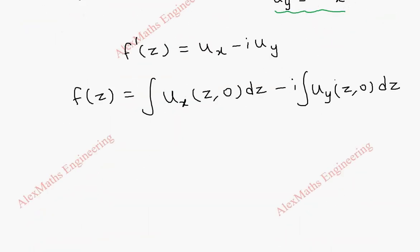Now ux we have written here: 3z² plus 6z. So this is integral of (3z² plus 6z)dz. The second term is fully 0, and we have a constant plus c at the end.